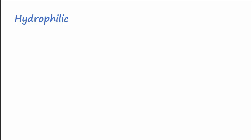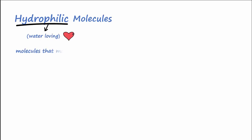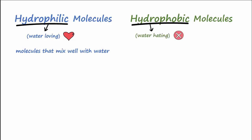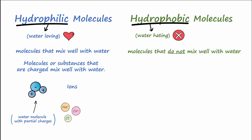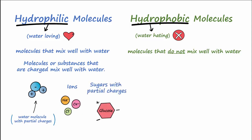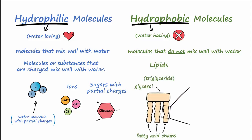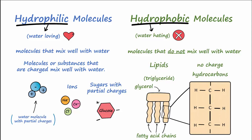One last important concept. You may be familiar with the term hydrophilic to describe molecules. Hydrophilic molecules mix well with water. Hydrophobic molecules, on the other hand, are molecules that hate water and do not mix well with it. Molecules or substances that are charged mix well with water — this includes ions and sugar molecules that contain partial charges. Hydrophobic molecules include lipids because the structure of a lipid does not have a charge or a partial charge. This is because lipid molecules are mostly made up of carbon atoms attached to hydrogen atoms and are called hydrocarbons. Hydrophobic molecules tend to mix well with lipids and not water.